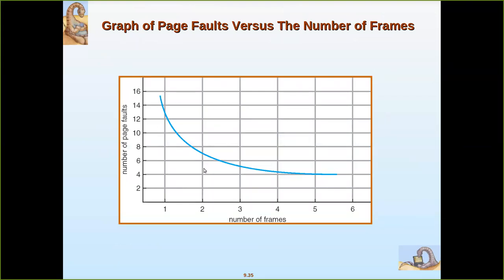This graph represents page faults versus the number of frames. The x-axis is the number of frames and the y-axis is the number of page faults. When the number of frames is small, the number of page faults is high, and it decreases as you increase the number of frames.